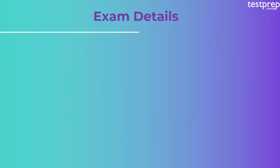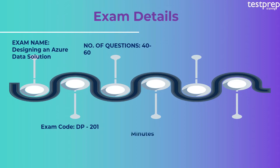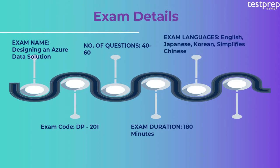Exam Details: The DP-201 exam includes 40 to 60 questions in the form of multiple choice. The candidate will get 180 minutes to complete the exam, and in total they get 210 minutes. The exam is available in various languages such as English, Japanese, Chinese, and Korean. The candidate has to pay $165 US dollars as the examination fee.